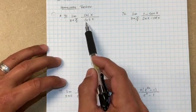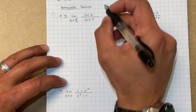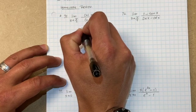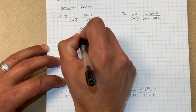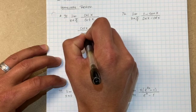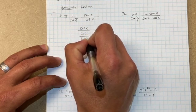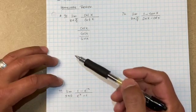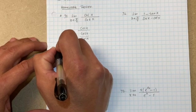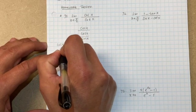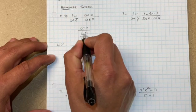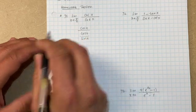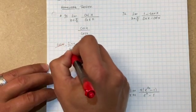So the idea is: can I rewrite this? And yes, you can. Remember, tangent is sine over cosine. Cotangent you can rewrite as cosine over sine — that's the definition of cotangent. Now remember, dividing is the same thing as multiplying by the reciprocal. The reciprocal of cosine over sine would be sine over cosine.